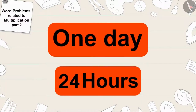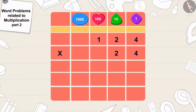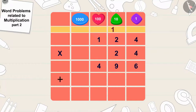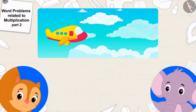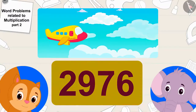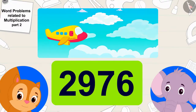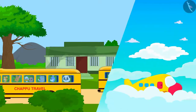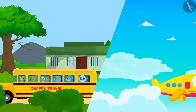Well done, kids — your answer is absolutely correct! There are 24 hours in a day, so 124 times 24, that is 2,976 people travel from Champapur to Ulta Pulta Nagar in a day by the airplane service of Chapu Travels. Chapu Travels achieved a lot of success in a very short period of time.